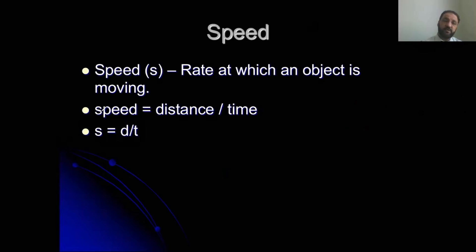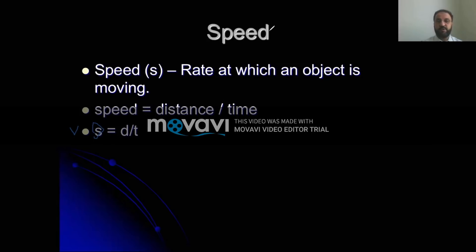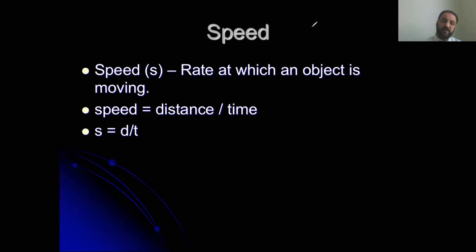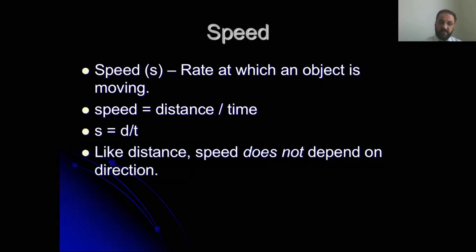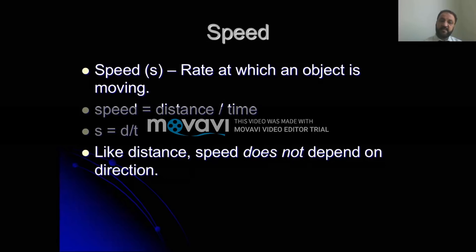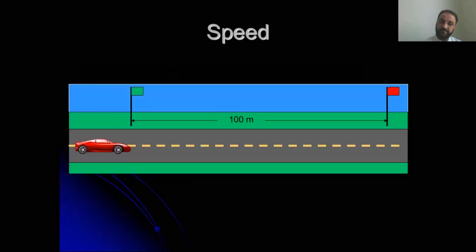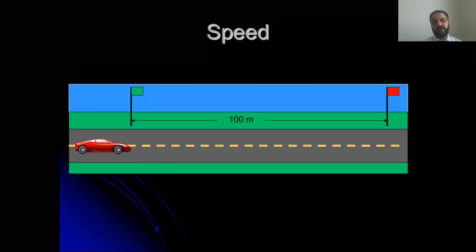In some cases we can also replace speed with V — both V and S can be used. V is also used to represent speed because speed and velocity are the same; the only difference is direction. That's why sometimes we use V for speed. Speed does not depend on direction — remember that. Whether you are moving in a zigzag path or a straight path, it doesn't matter.